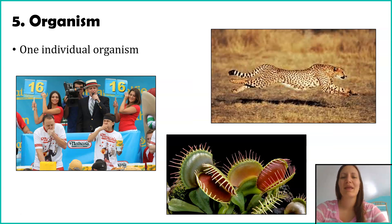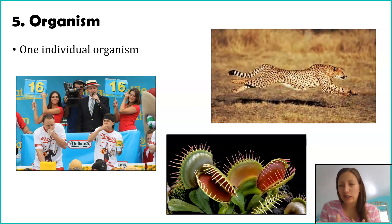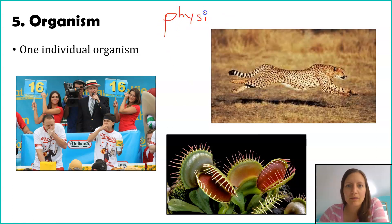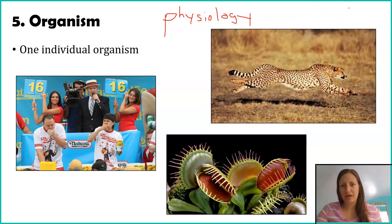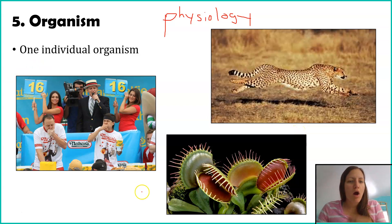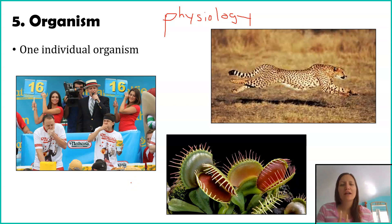The last level is the organism. This one's a bit different because we're talking about just that individual organism — that plant, that animal, that bacterium, that mushroom — and we're typically talking about its physiology: how it works. For example, how do a cheetah's leg muscles enable it to run so fast? How does a Venus flytrap know there's a fly in it? How are humans able to eat 16 hot dogs in a minute? These are the kinds of questions scientists are asking.